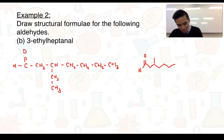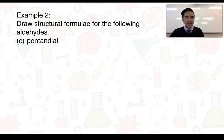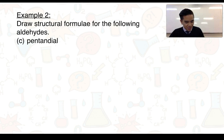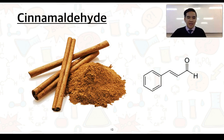Part C is pentanedial, which has two aldehyde functional groups. Pentan- indicates five carbon atoms. Looking at the skeletal formula, we start with one aldehyde functional group, draw five carbons, and end with a second aldehyde functional group. We also see a real-world example of an aldehyde: cinnamaldehyde, a key component of cinnamon, which contains the aldehyde functional group along with other structural features.